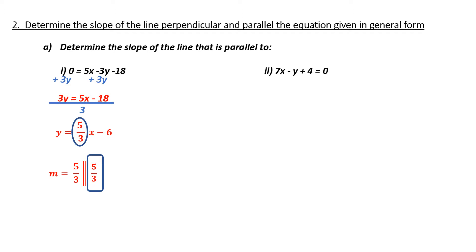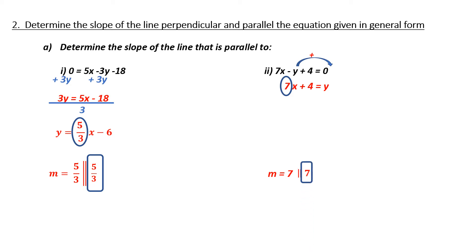Stop the tape and do the second one yourself, and we'll do it in a minute together. We're back. What is my first step to find the slope that's parallel to this? Find the slope of the original equation by converting to slope-intercept form. I need to isolate for y by adding y to both sides. Notice, this is now in slope-intercept form, so I don't have to do anything further, except notice that my slope is the number in front of x, or 7. Therefore, the slope of the line parallel to this would also be 7.